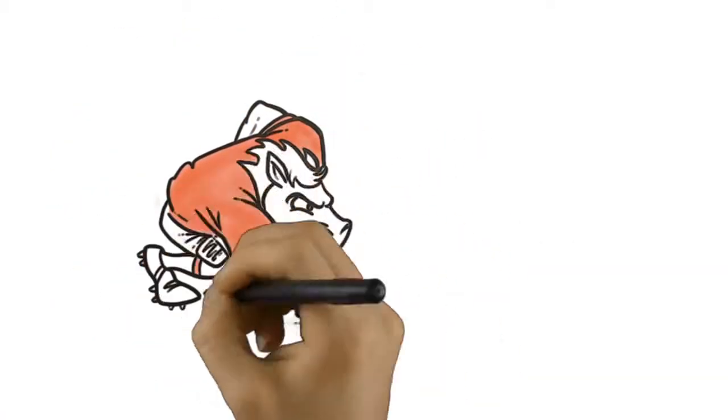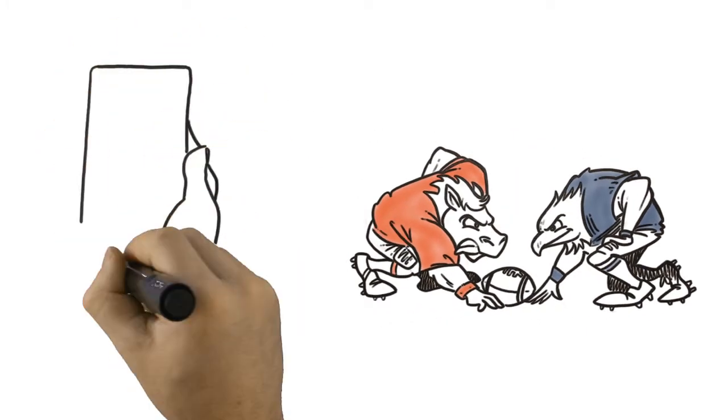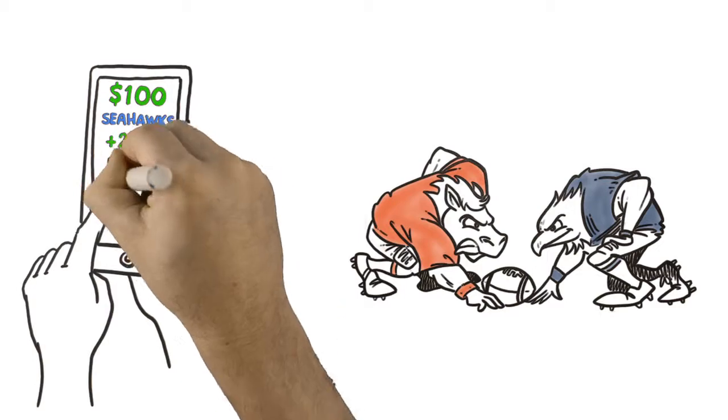Let's take a closer look. Say you bet on the 2014 big game. First, you make your bet the same way you always have, $100 on the Seahawks at 2.5 points.